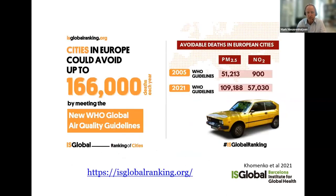First of all, we were looking at air pollution. Air pollution is still a big problem within cities, including in the EU. We estimated how many deaths could be prevented if you would meet a certain level of exposure. We looked at the WHO air quality guidelines and estimated that we could avoid more than 160,000 deaths each year if we would meet the new WHO guidelines for air pollution — for PM2.5, that's 5 micrograms per cubic meter, and for NO2, 10 micrograms per cubic meter.